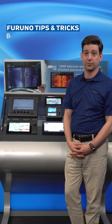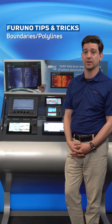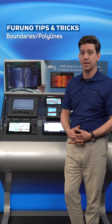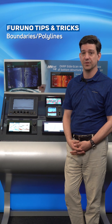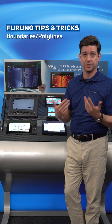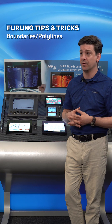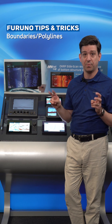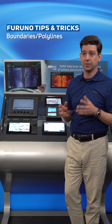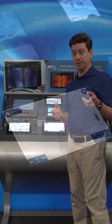Hi, I'm Clayton Patterson with Furuno Technical Support, and today we're talking about the GP 1871 and 1971F combination units. One of the most common questions we get is how do I create a boundary area, or polyline as they're referred to on these plotters? It's really quite simple, and I'll show you how to do it.